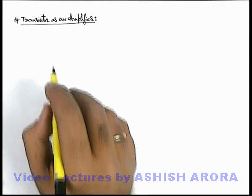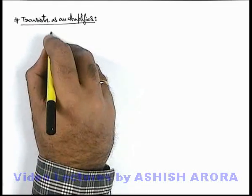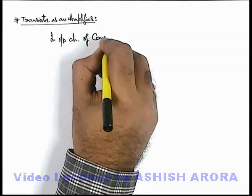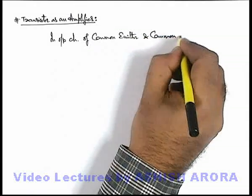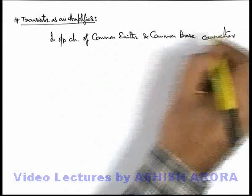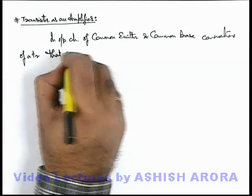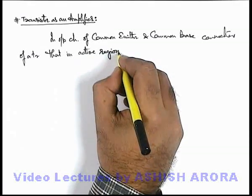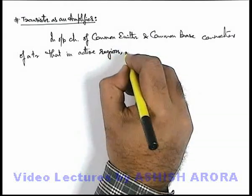Let us now discuss how a transistor can be used as an amplifier. We already discussed in the output characteristics of common emitter and common base connections of a transistor that in the active region — recall that the active region is when the base-emitter junction is forward biased and the collector junction is reverse biased. We've discussed that in the active region,